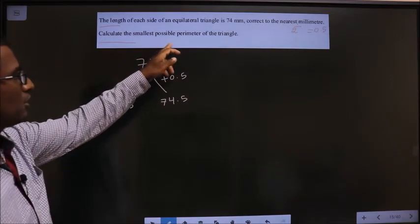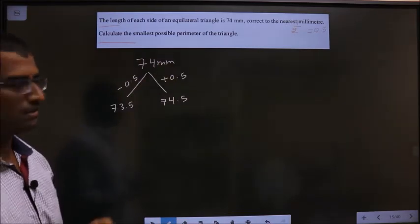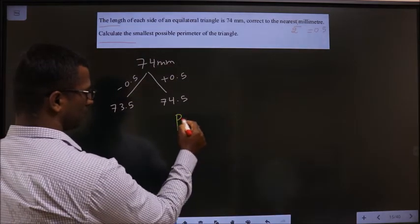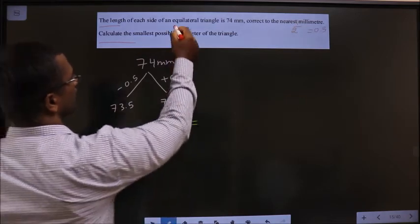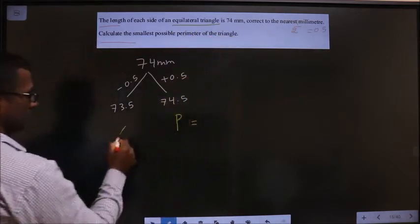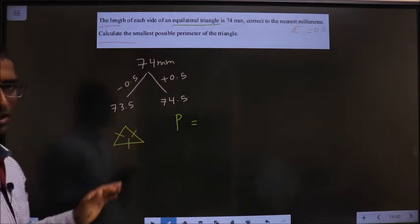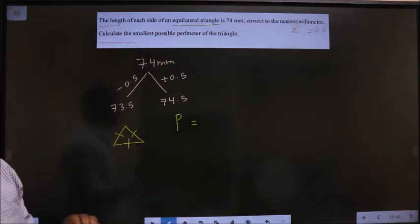Calculate the smallest possible perimeter of the triangle. So perimeter you have to find out for equilateral triangle. Equilateral triangle means length of all the sides are equal.